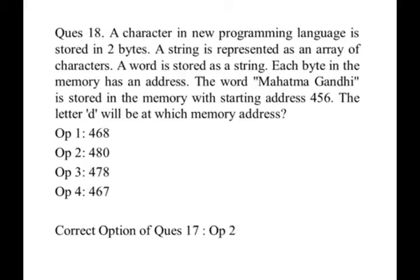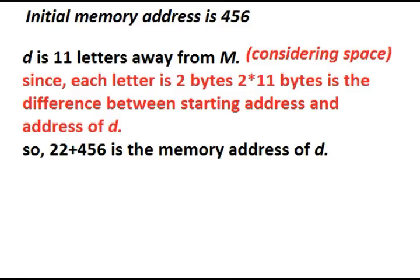The starting address is 456, and each letter occupies 2 bytes. Now initial address is 456, so D is 11 letters away from M. That is, 11 into 2 bytes, that is 22 bytes. So if we add 22 bytes to 456, we can reach to the address of D. The data type here will only be used to store either true or false, so taking Boolean will suffice.